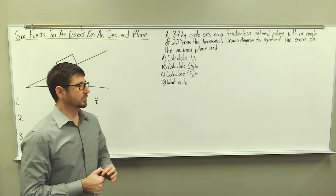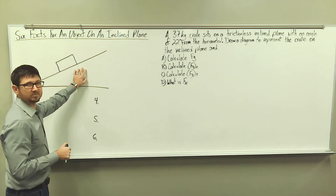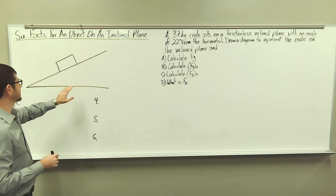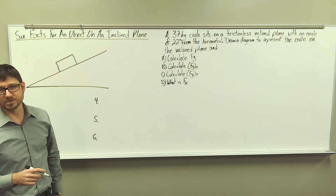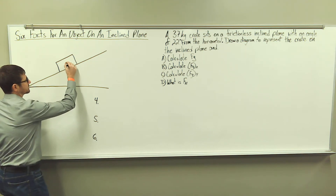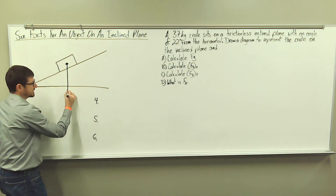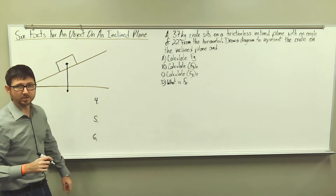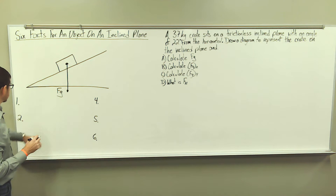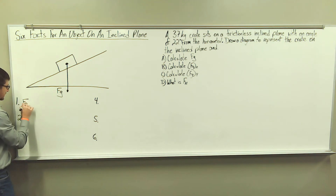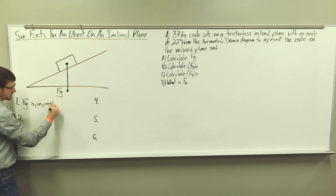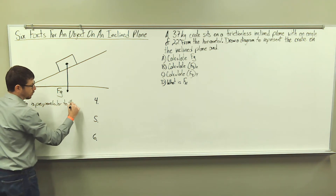So let's go ahead and get started. Right here we have an inclined plane and we have our object drawn on the inclined plane. What we always want to do is start out with the weight force due to gravity. The weight force vector points down and is perpendicular to the horizontal. Weight force is identified by F sub G. So for fact number one, F sub G is perpendicular to the horizontal.